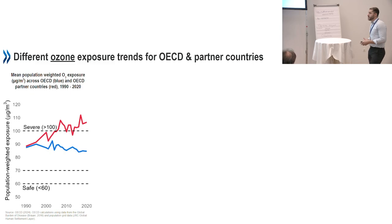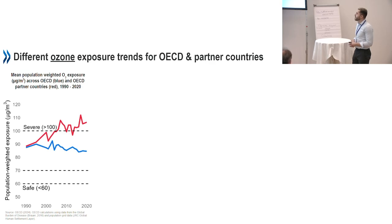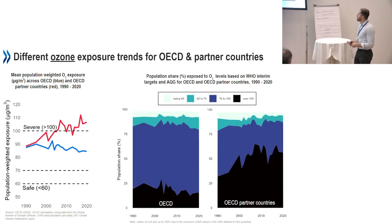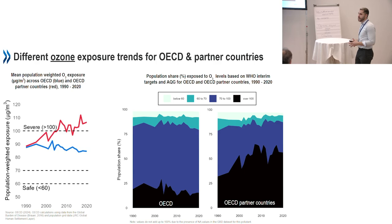For ozone — an air pollutant more prevalent in warmer conditions in the northern hemisphere due to interactions with other pollutants, heat, and sunlight — OECD countries show a steady decline over two decades, while there is actually a considerable increase in ozone exposure for OECD partner countries. Looking at population share, for OECD partner countries the proportion exposed has gone from around 30% to more than half of the population over 30 years — considerable given that countries like China and India are included.